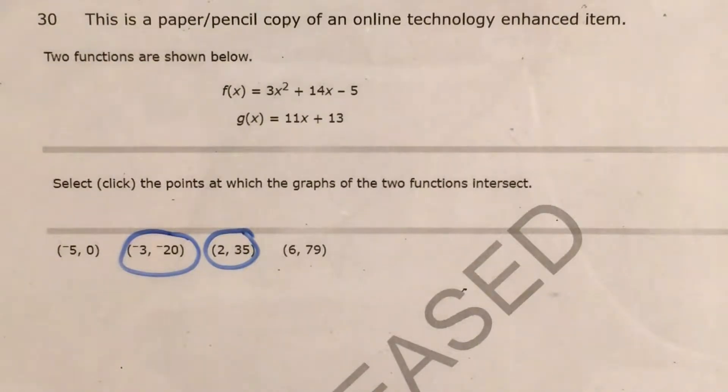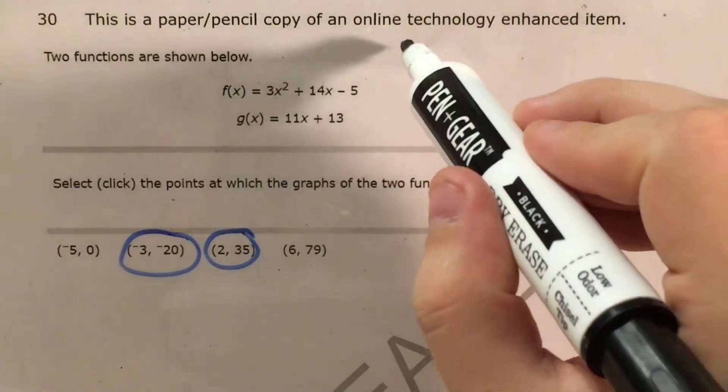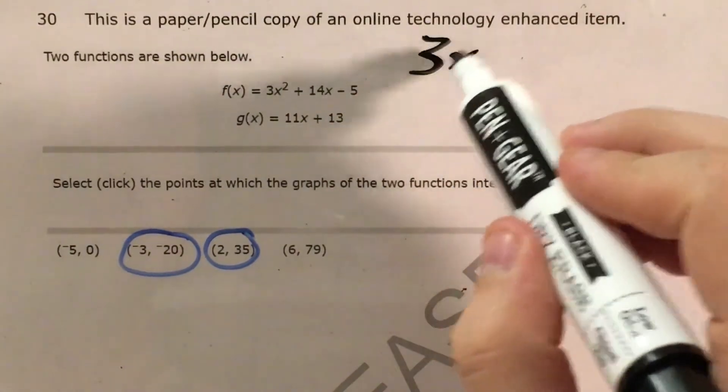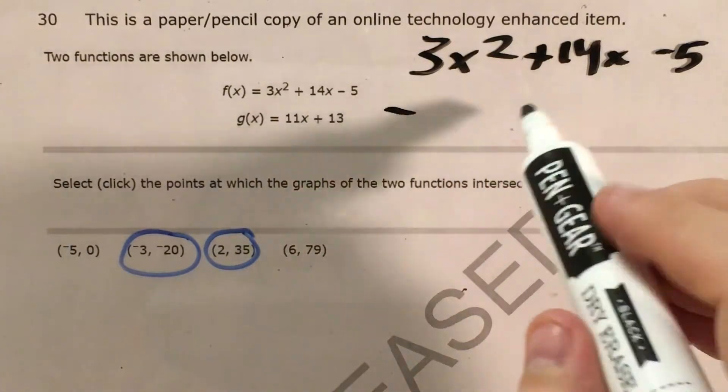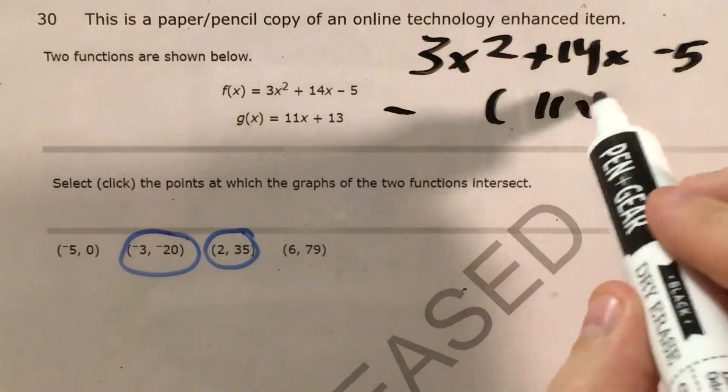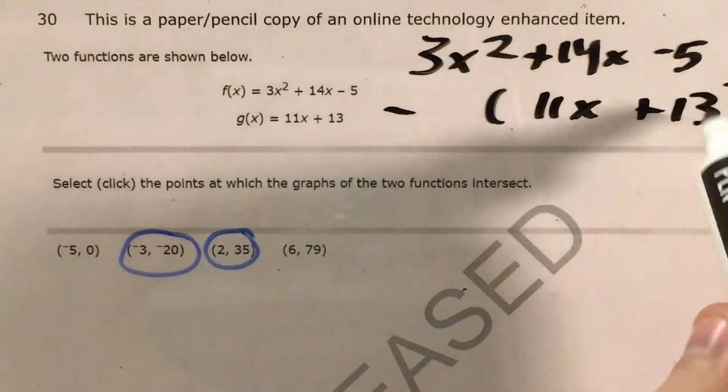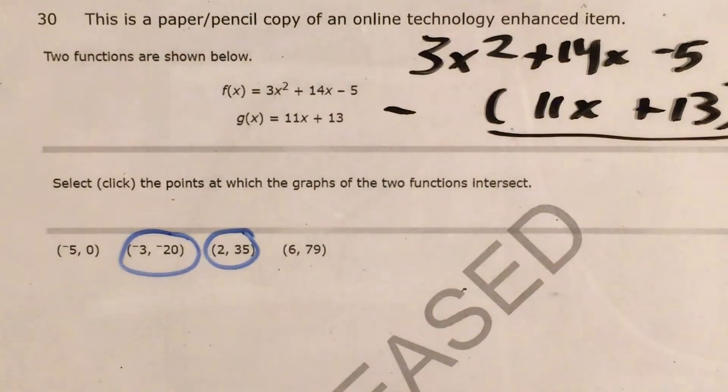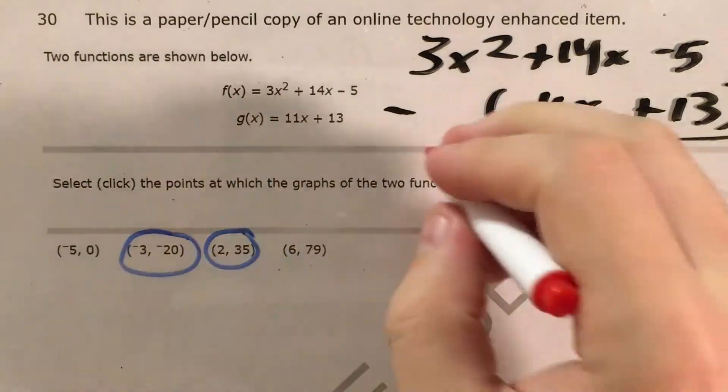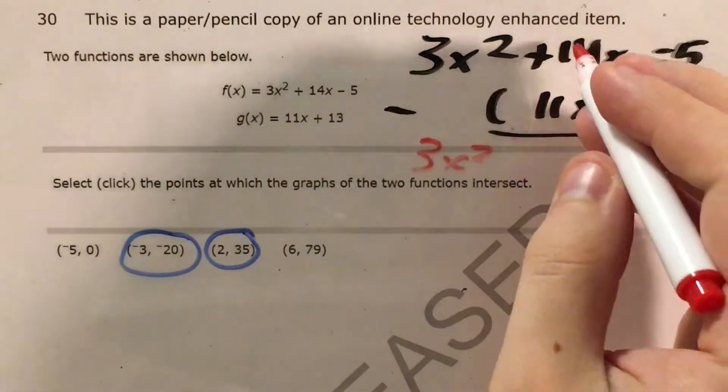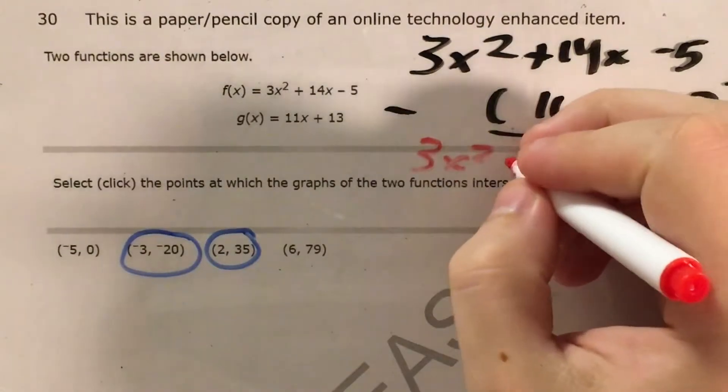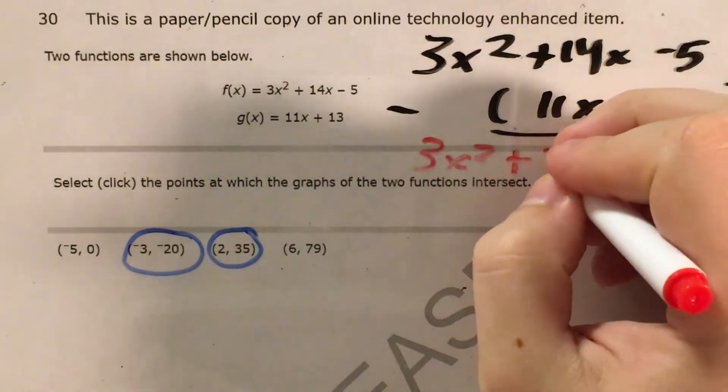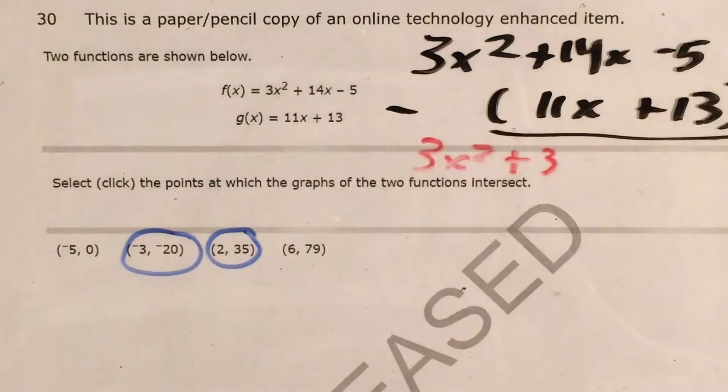And it's actually what we call elimination. And that means that essentially, I'm going to take my first function and I will subtract my second function from my first function. 3x squared minus nothing is just going to give me 3x squared. 14x minus 11x, that's like if I have $14 and I spend $11, which leaves me with positive $3.